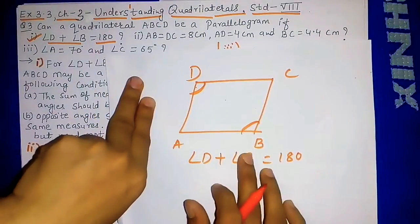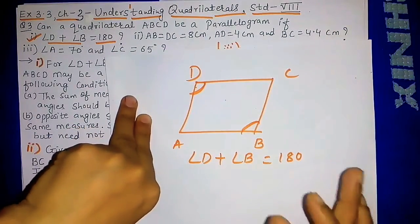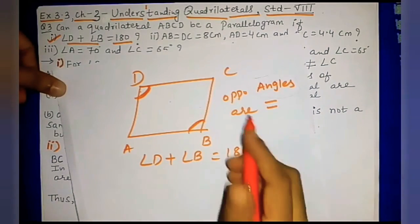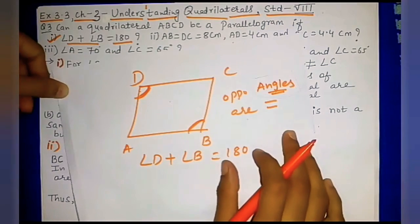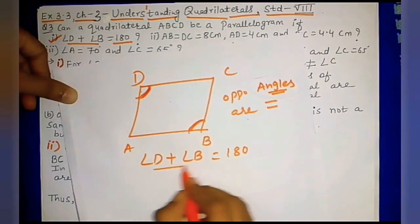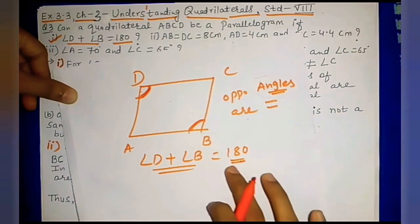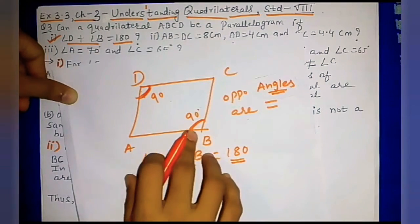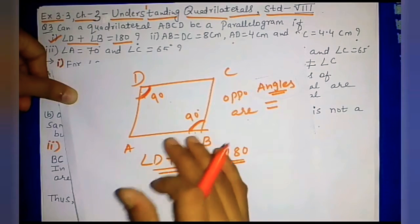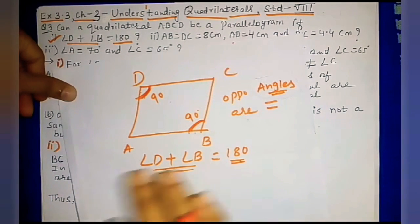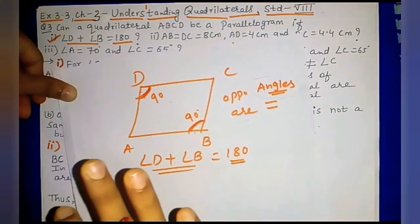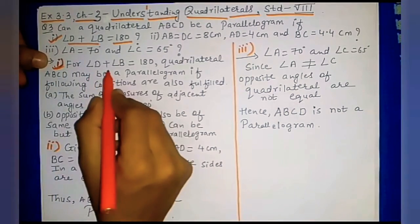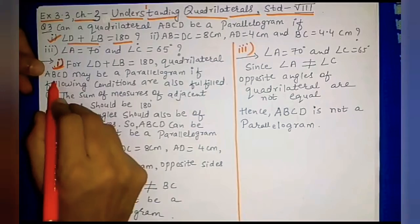For this quadrilateral to be a parallelogram, the property must be satisfied: opposite angles are equal. So angle D and angle B should be equal, and their total is 180°. If both are equal, each should be 90°. Only if both angles are 90° can we say it is a parallelogram. So it is not compulsorily a parallelogram — it may be a parallelogram, but not in all cases.